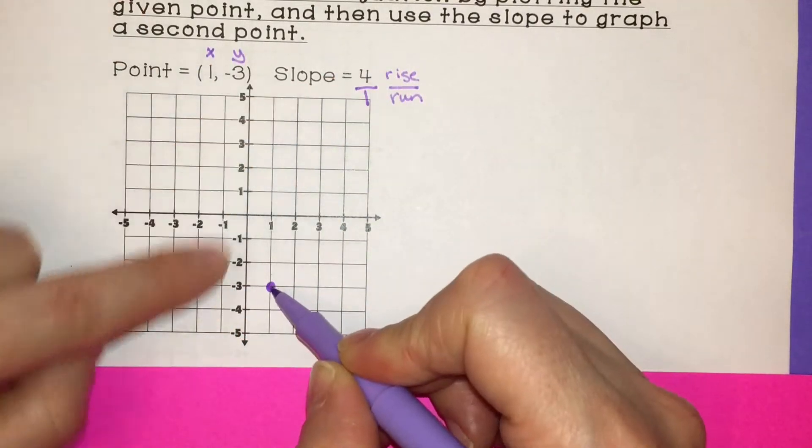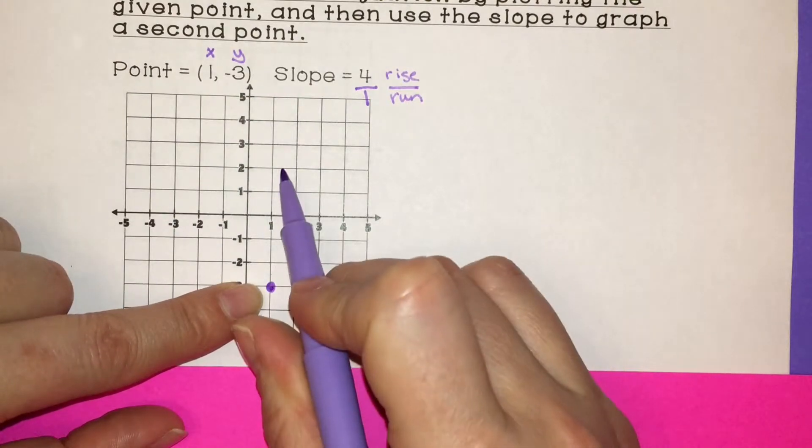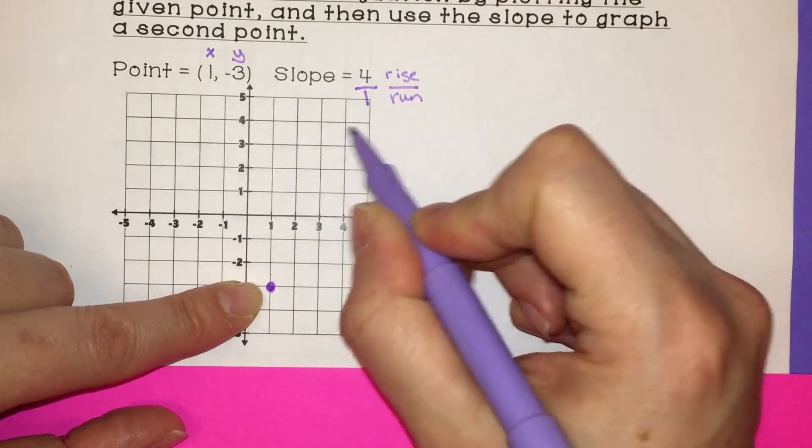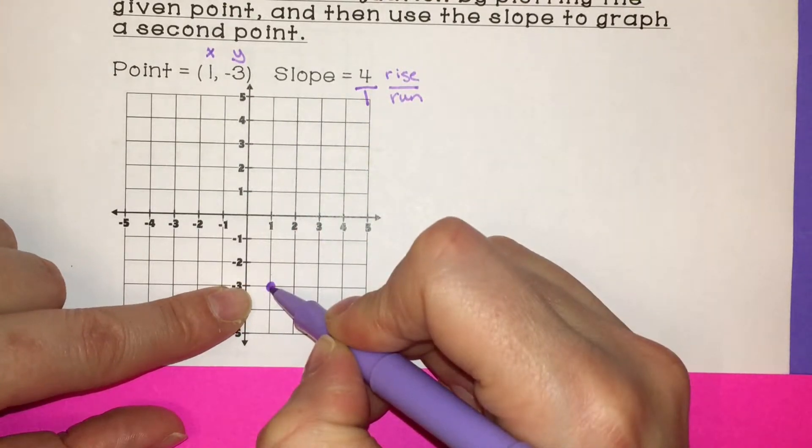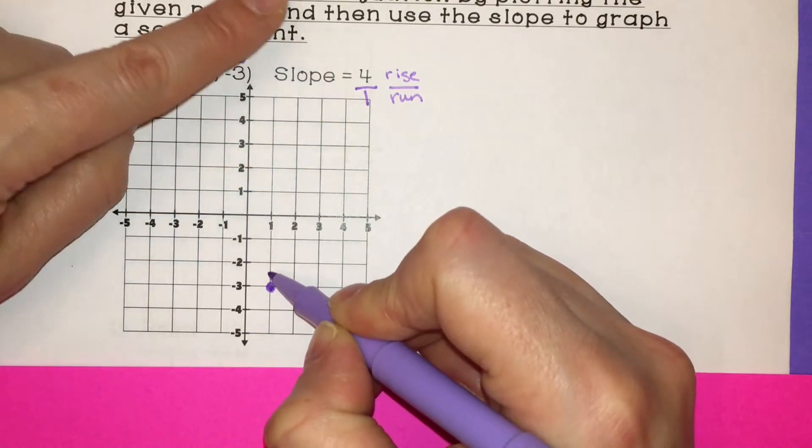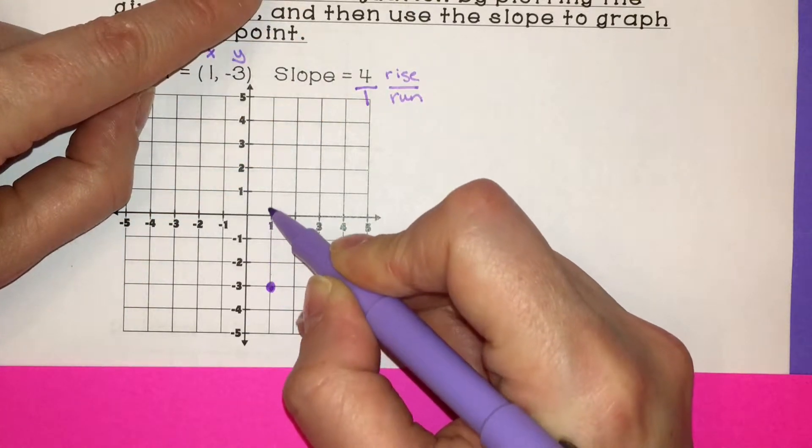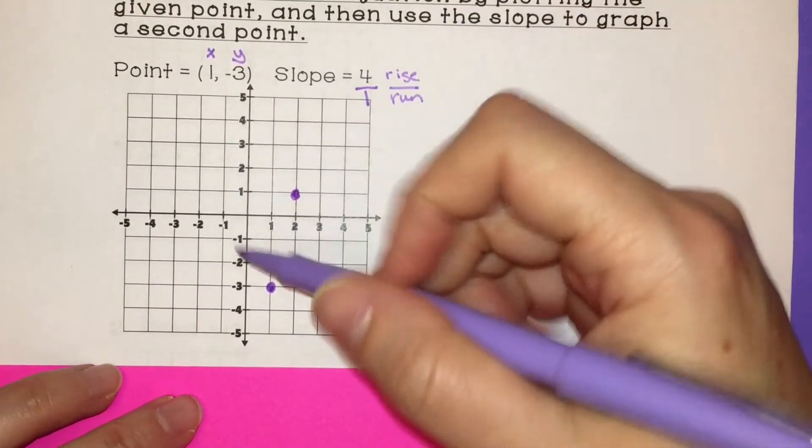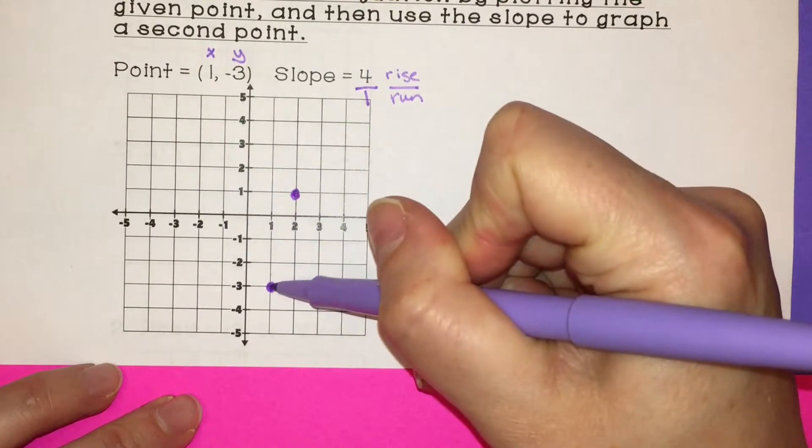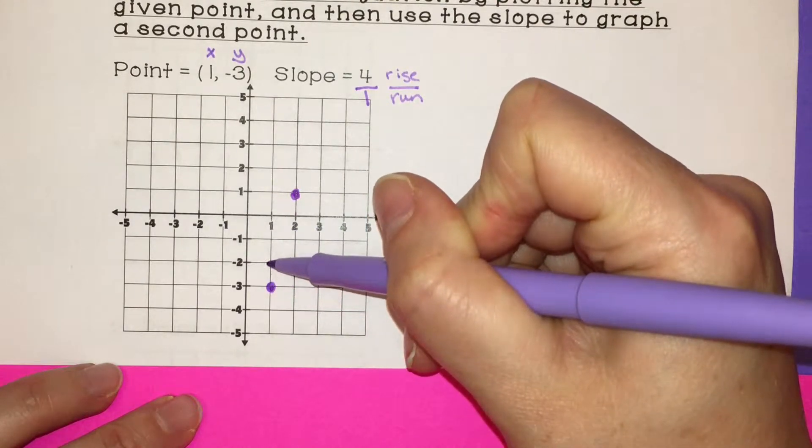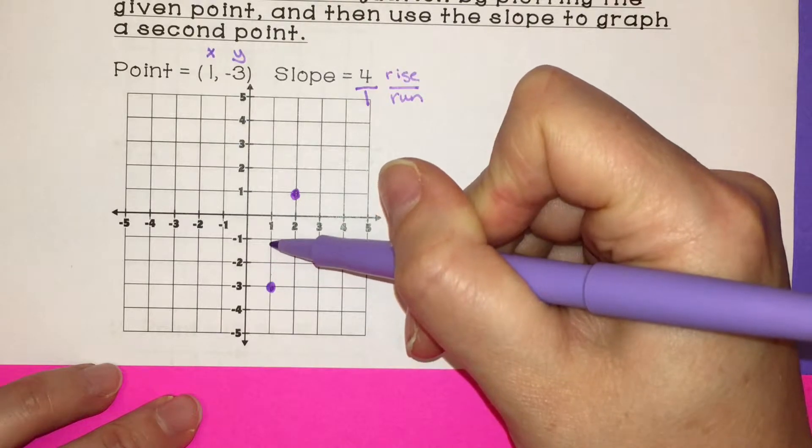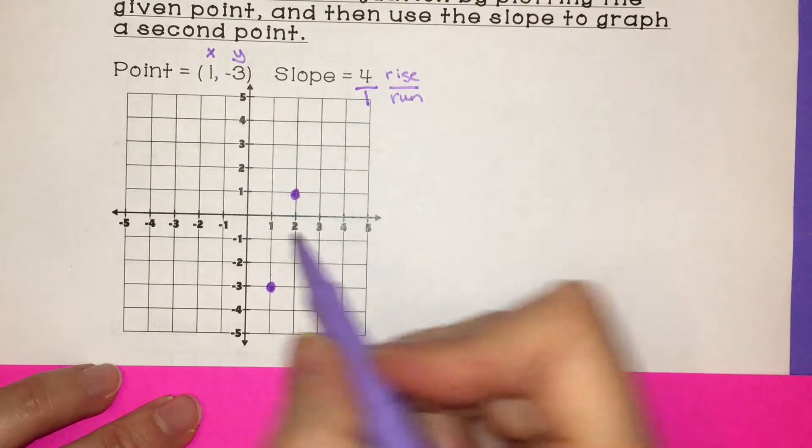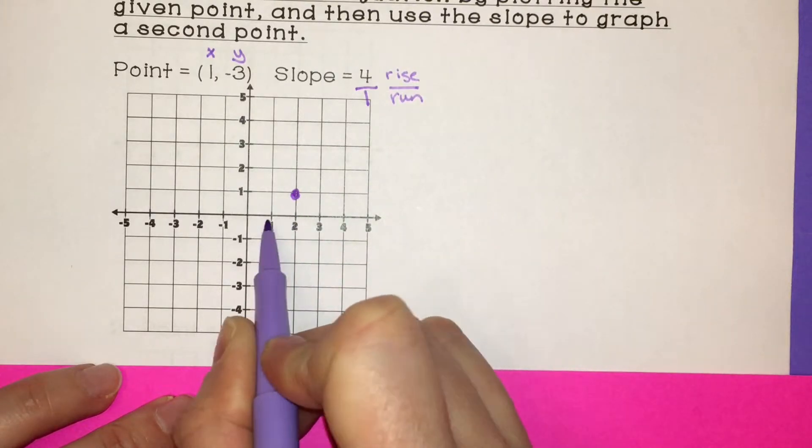So remember with rise, anytime it's positive, you go up. If it's negative, you go down. With run, if it's positive, you go to the right, negative to the left. So from our first point, we're going to rise 4. So up 4: 1, 2, 3, 4. Run 1 to the right. So when you're counting these up 4, where you start at, you don't start counting yet. Once you've gone through a whole box, it's counted as 1, 2, 3, 4. And then to the right, one whole box. You have to go a whole unit or a whole coordinate over.